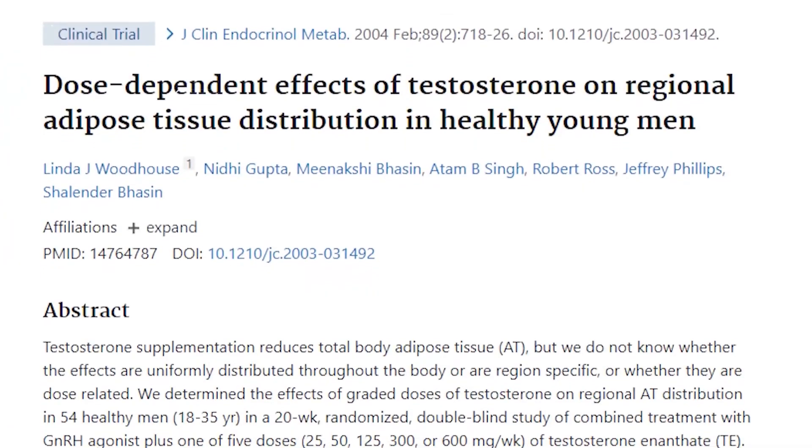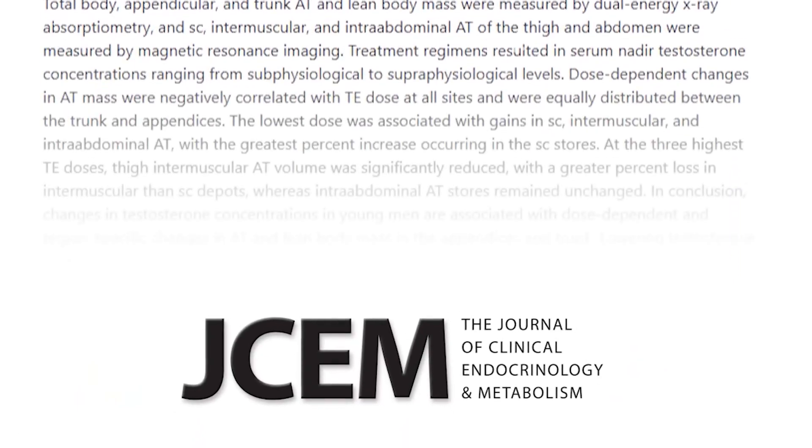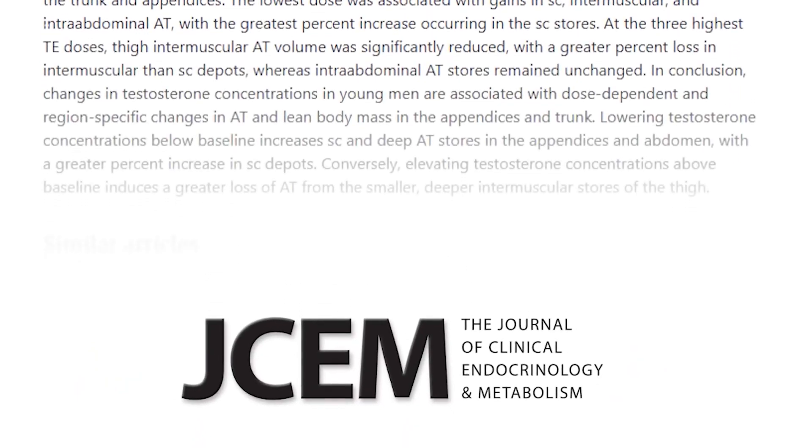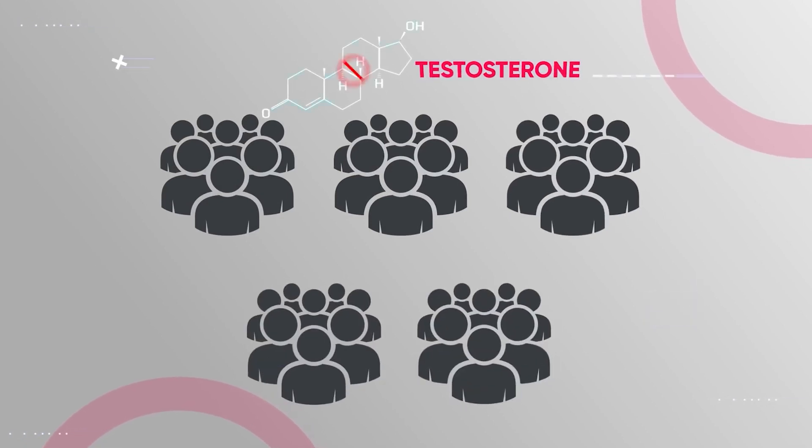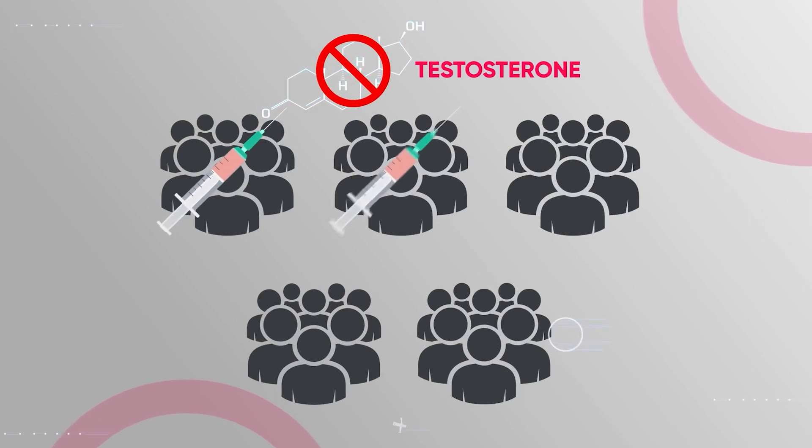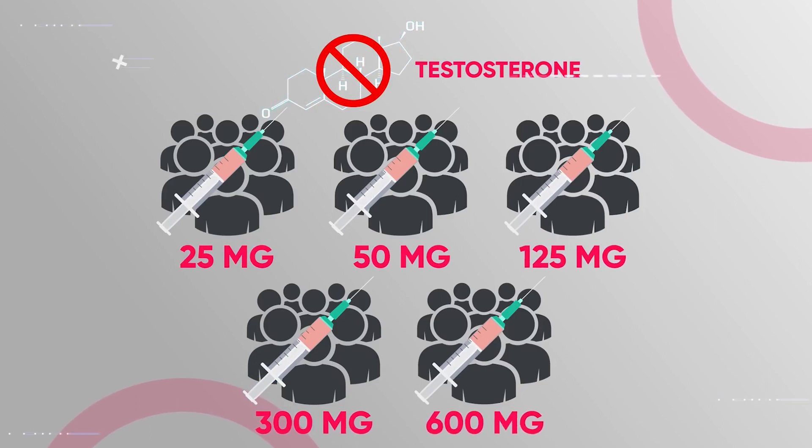This was supported by a fascinating, randomized, double-masked study published in the Journal of Clinical Endocrinology and Metabolism. The researchers then divided the men who could no longer generate testosterone into separate groups and gave each one of 5 testosterone enanthate doses weekly. There were 25, 50, 125, 300, and 600 mg doses.